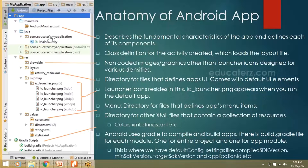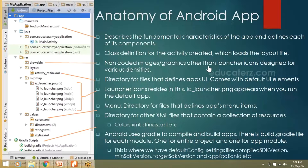The next directory is the resource directory, called the res directory. It has different subfolders like drawable, layout, mipmap, and values. The drawable folder contains non-coded images, backgrounds, or graphics — other than launcher icons — designed by a developer or designer for various screen densities.